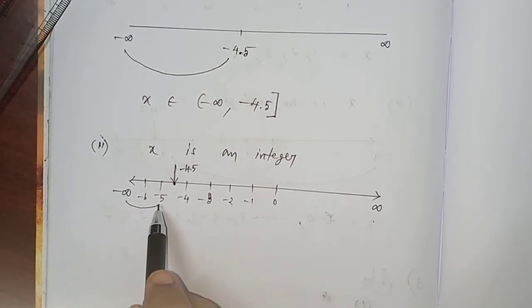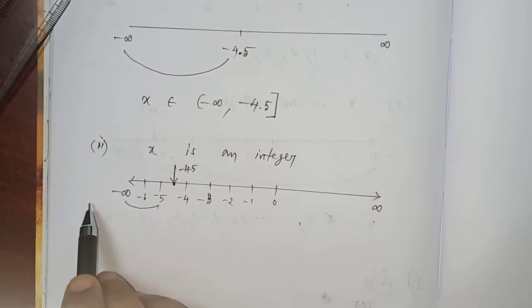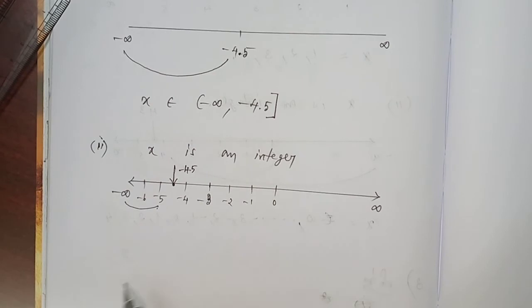So, here set of integers means you start with -5 only. -5, -6, -7, etc. up to minus infinity. Okay?